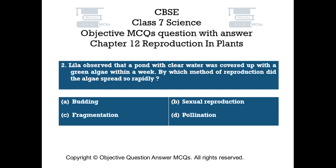Question number 2. Lila observed that a pond with clear water was covered up with green algae within a week. By which method of reproduction did the algae spread so rapidly? Option A: Budding. Option B: Sexual reproduction. Option C: Fragmentation. Option D: Pollination.